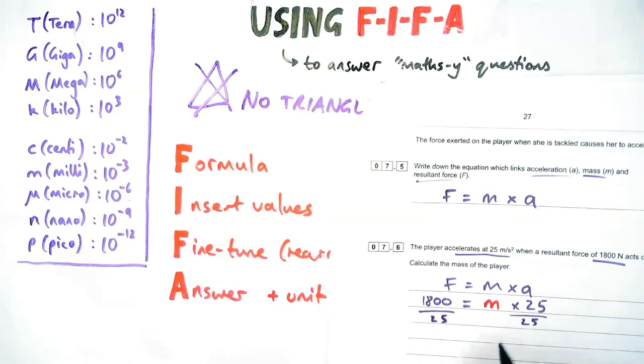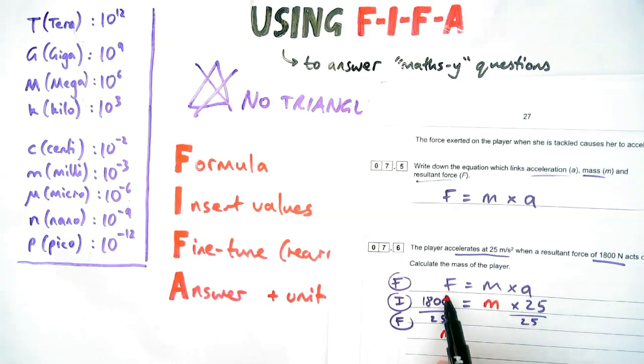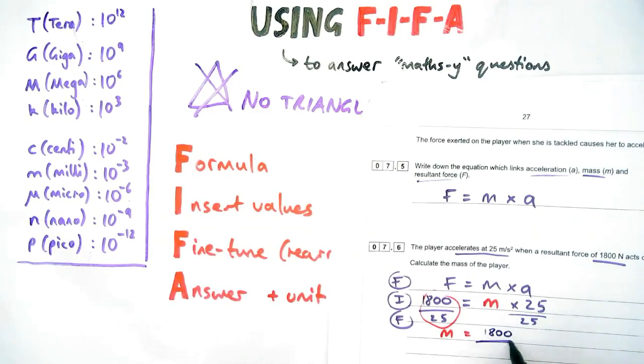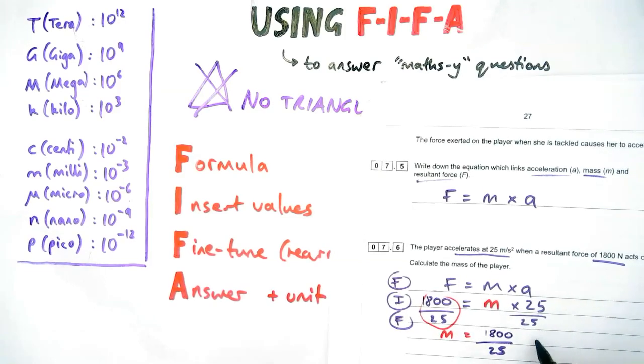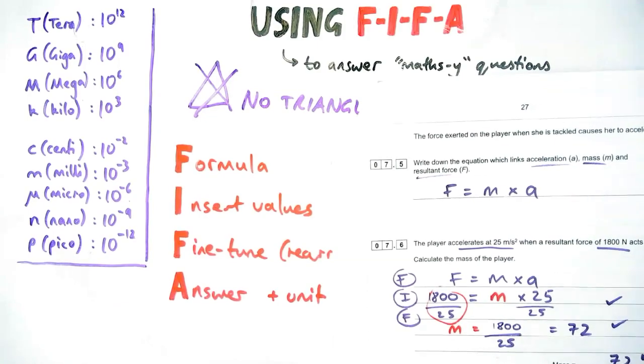After that point, you need to get rid of the times 25. So what's the opposite of times by 25? We're going to divide. So that's our second F, that's our fine tuning—what do we need to do to find the mass in this case? Now once I know to divide by 25, that's just something I put into my calculator. So 1800 divided by 25 happens to be 72 kilograms, which also sounds like a sensible amount for a player. And that's your three marks for that question. So formula, insert values, rearrange, and there's your answer.